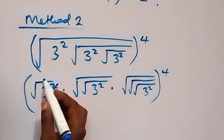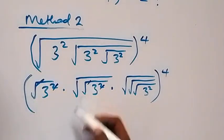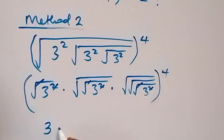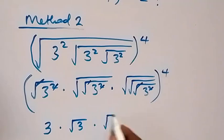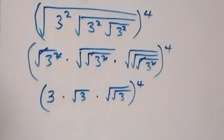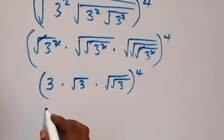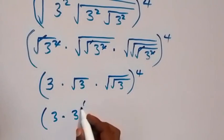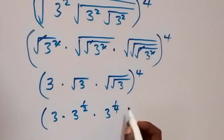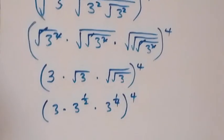The square here cancels the square root, one square here cancels the square root, square here cancels the square root. So what we are left with is 3, then times root of 3, then times 2 roots left, then 3, raised to power 4. We can write it as 3 times 3 raised to power one-half, then times 3 raised to power one-quarter, because we have half times one-quarter here, that is one-quarter, then raised to power 4.